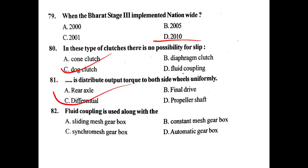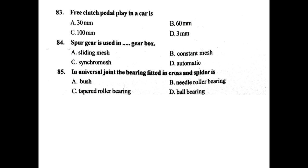Fluid coupling is used along with the automatic gearbox. Free clutch pedal play in a car is 30 mm. Spur gear is used in the sliding mesh gearbox. In a universal joint, the bearing fitted in the cross and spider is a needle roller bearing.